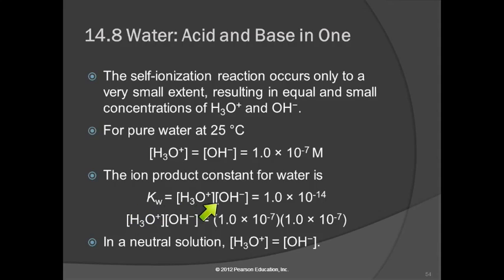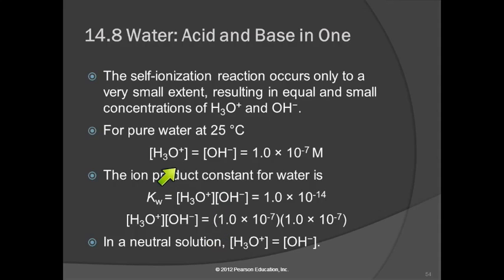There's the equilibrium constant expression and the value of the equilibrium constant. Just like with solubility products, knowing that the concentration of hydronium equals that of hydroxide, we can calculate each concentration as 1.0 times 10 to the minus 7 moles per liter. In a neutral solution, the concentration of hydronium equals the concentration of hydroxide ion.